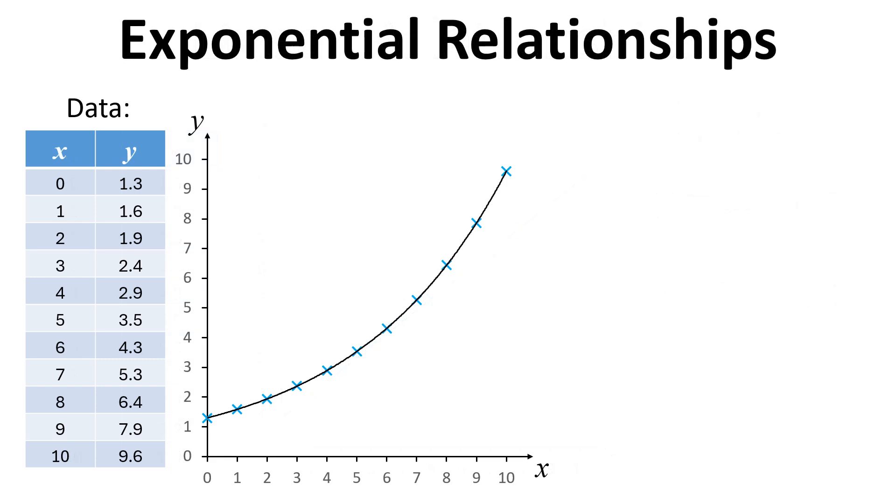Here's an example of some data that has an exponential relationship. The equation in this situation is y equals a times e to the power of bx. To fit the equation to the data, we need to find the value of a and b that actually satisfies the equation to go through those points.